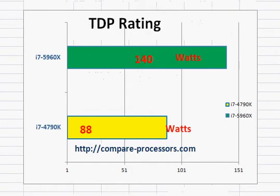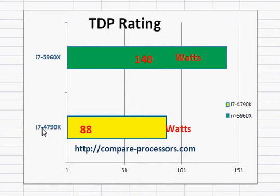TDP rating is another thing to keep in mind. The i7-4790K runs much cooler at 88 watts.